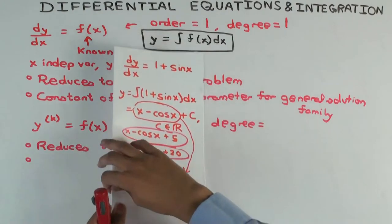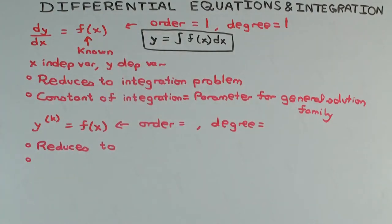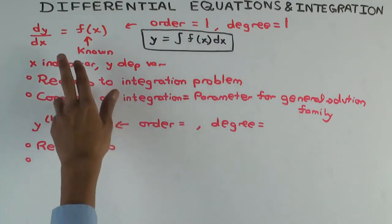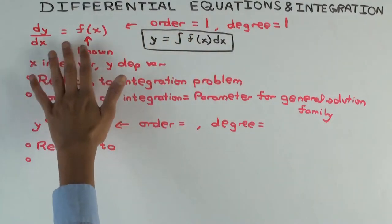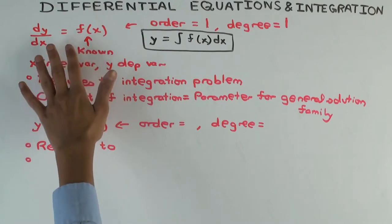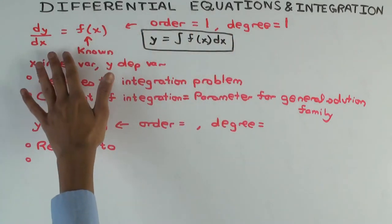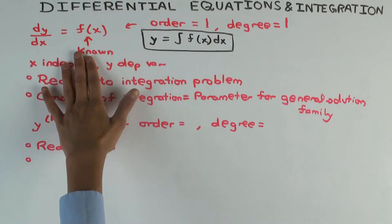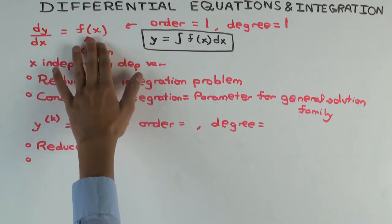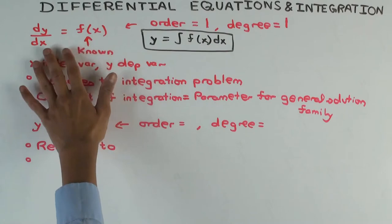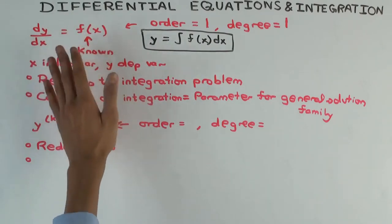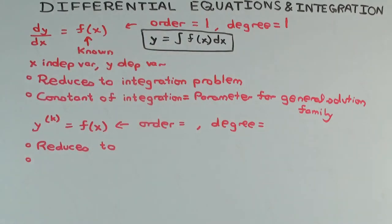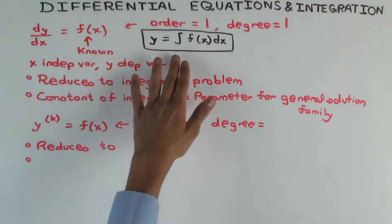The general solution is the particular solution plus a constant. But this is a very, very special type of first order, first degree differential equation. In general, there will be stuff involving y as well. This equation is special because y itself doesn't appear separately — only dy/dx does — which is why it's easy to convert to an integration problem.